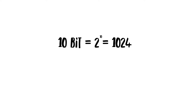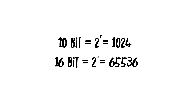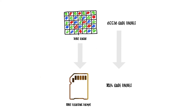With a 10-bit image, we have 2 to the power of 10, or 1024 possible code values. With a 16-bit image, we have 2 to the power of 16, or 65,536 possible code values. And trying to fit these 65,536 equally – or linearly – into 1024 means really stretching the 1024 to contain the 65,536.